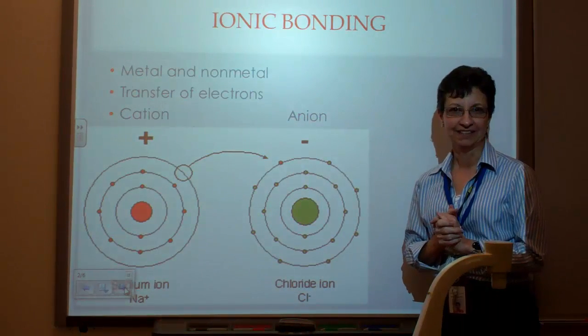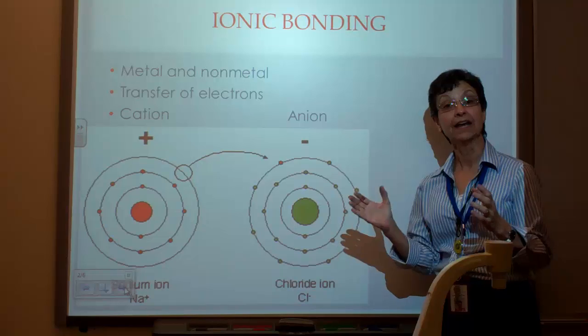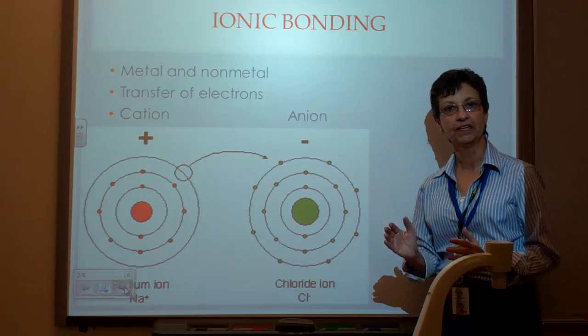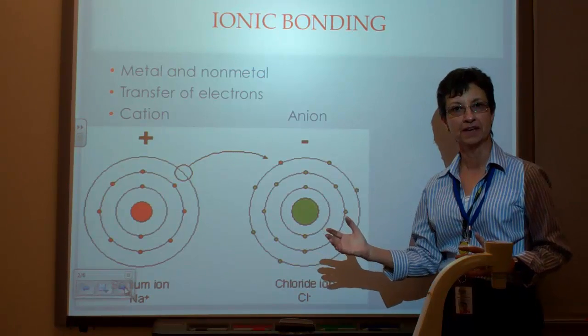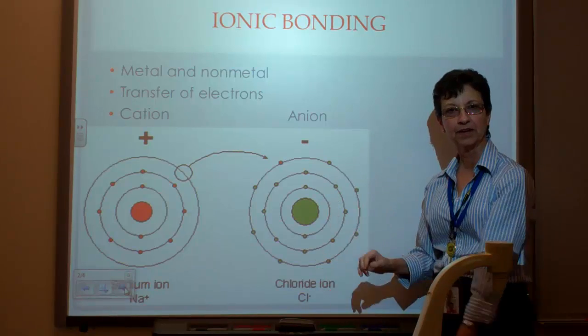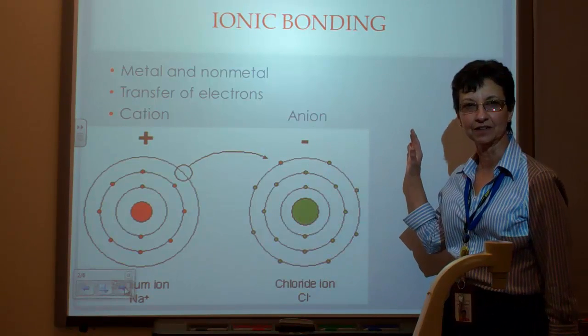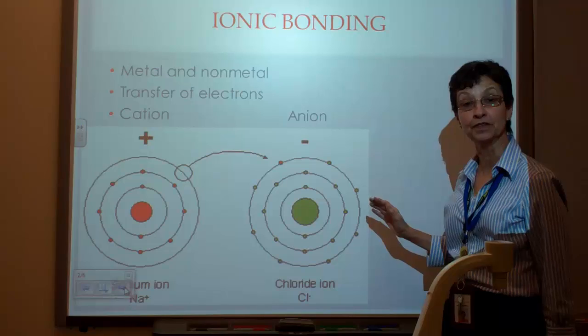So what is ionic bonding? We already mentioned that ionic bonding is between a metal and a nonmetal, the left-hand side of the periodic table and the right-hand side of the periodic table above this exact line.